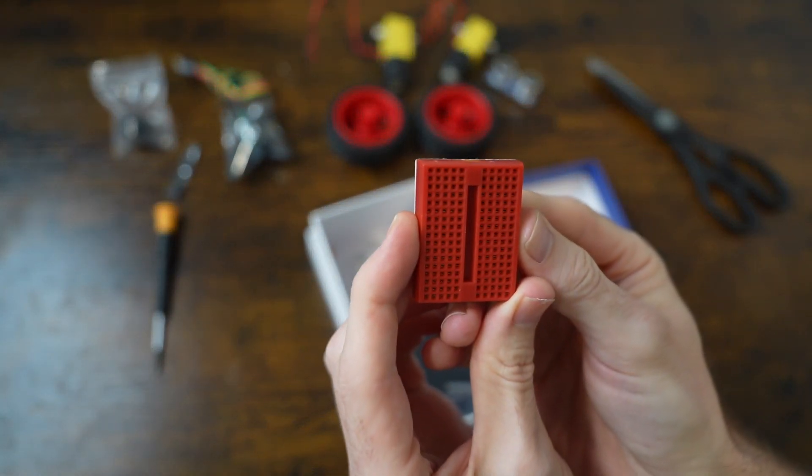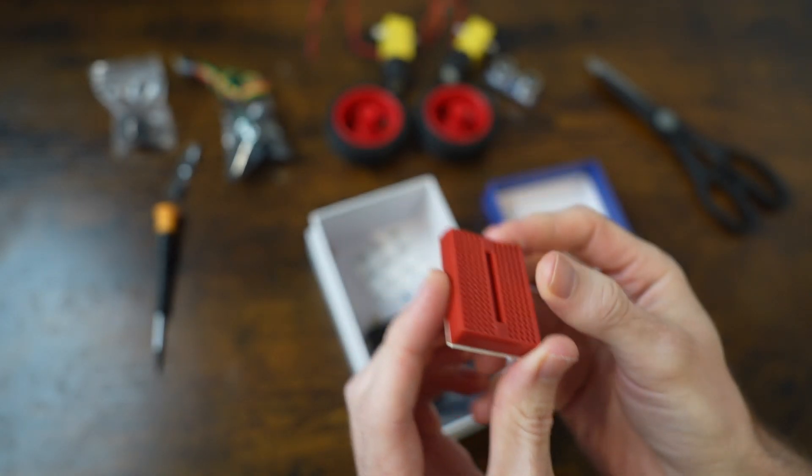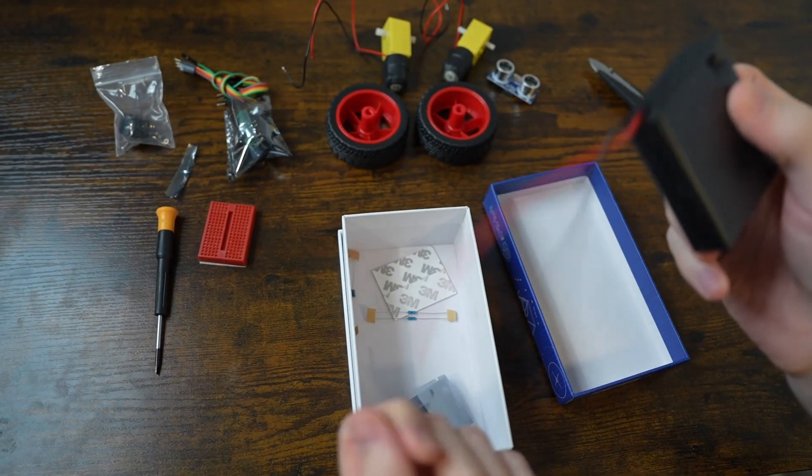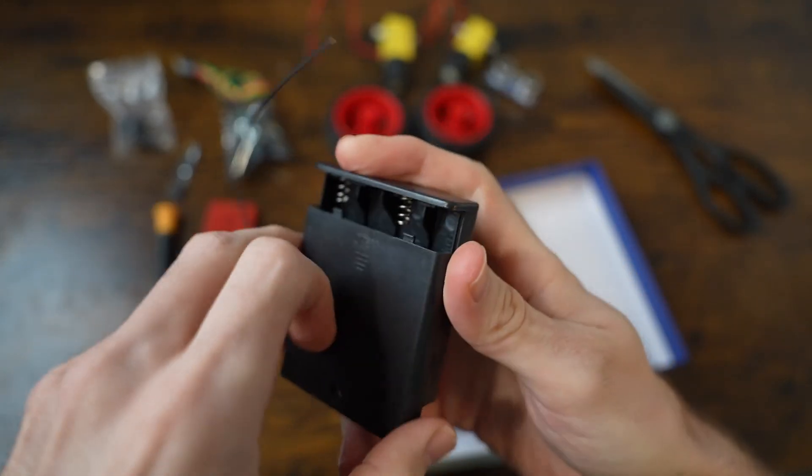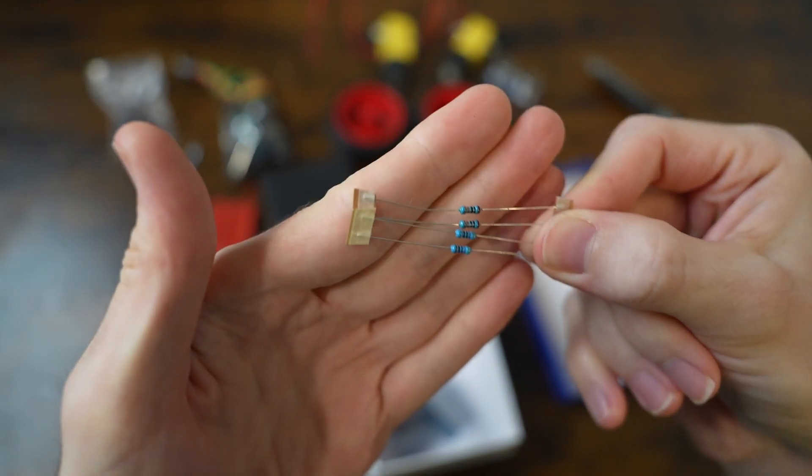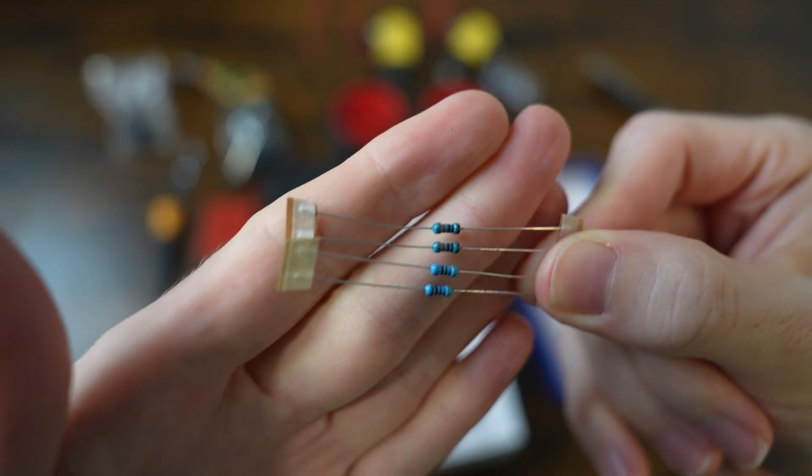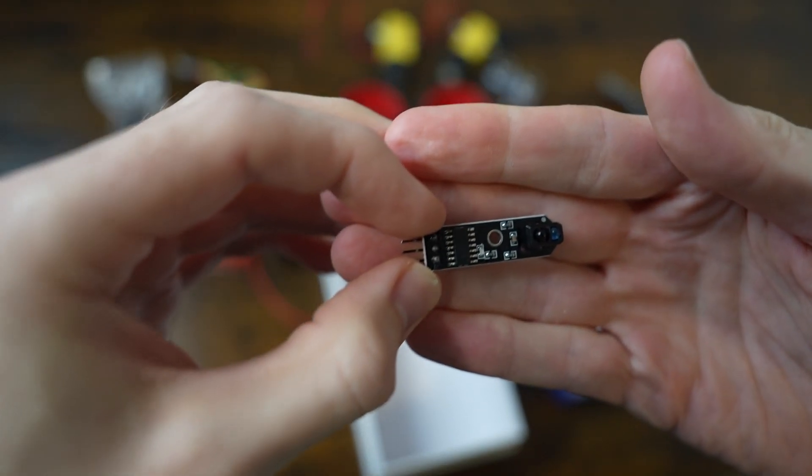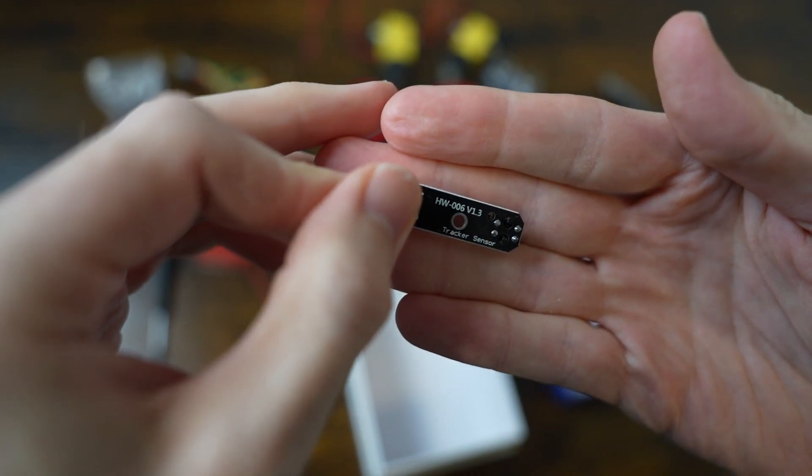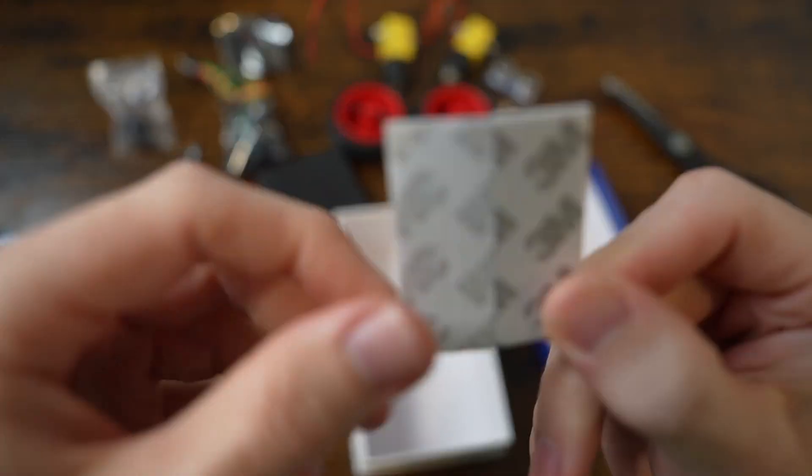A breadboard, which is used for connecting different components together, the battery box, which will contain four AA batteries, resistors used with the sensors on the breadboard, a tracker sensor, and two strips of double-sided tape.